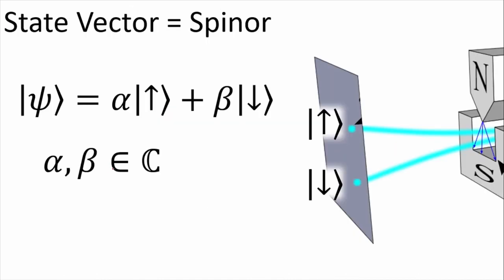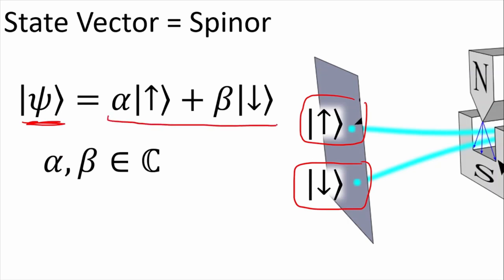The first interpretation of a spinor is basically a state vector in quantum mechanics. If this is our spin-up state and this is the spin-down state, then a spinor state would be a superposition of those two, where alpha and beta are complex numbers. I'm assuming everyone has seen this before — it isn't too crazy or different.